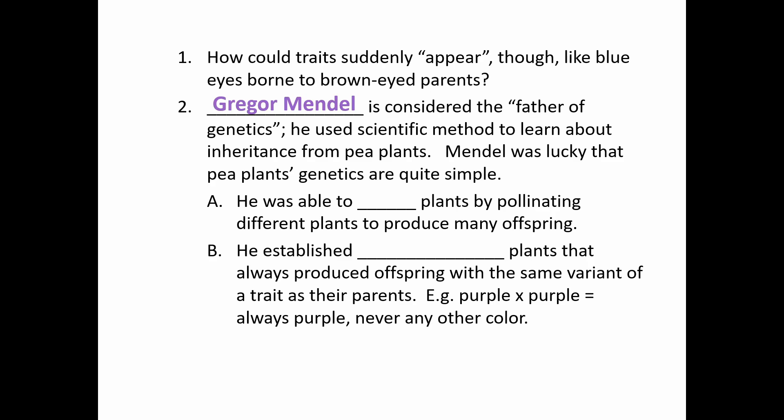Gregor Mendel is really considered the father of genetics. He applied the scientific method to learn about how traits were inherited in pea plants, and lucky for him, pea plant genetics are pretty simple. So he was able to come up with some really awesome theories as to what was going on. What he did was cross plants by pollinating different plants to produce many different types of offspring.